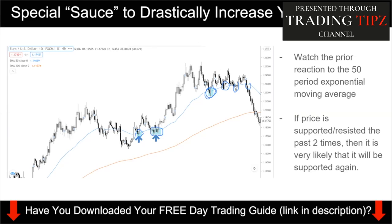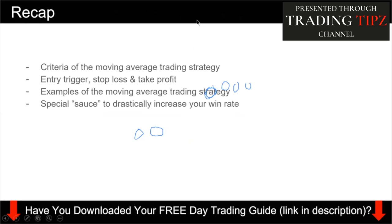To recap today's video: the criteria of the moving average trading strategy are - first, follow the long-term trend using the 200 EMA (buy if price is above, sell if price is below); second, look for a bounce off the 50-period EMA. The entry trigger uses candlestick patterns; stop loss uses 1 ATR; take profit targets the previous swing high or swing low, or you can trail your stop loss accordingly.